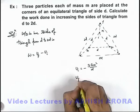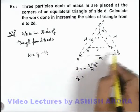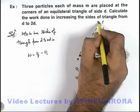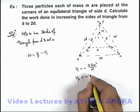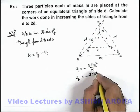Similarly finally, again the 3 masses m, m, and m are located at a separation 2d, so final energy we can write as minus 3Gm² by 2d.